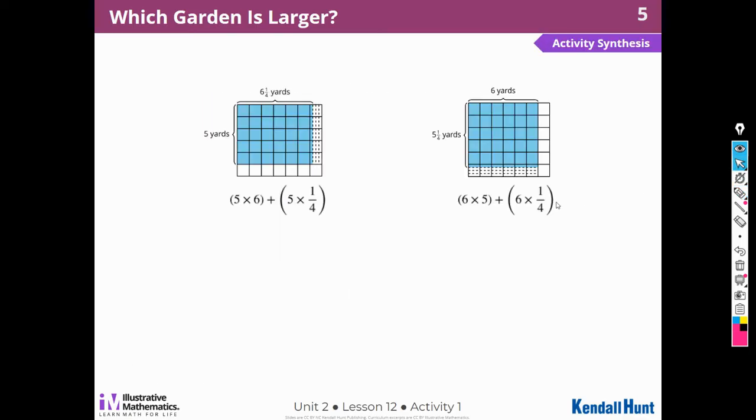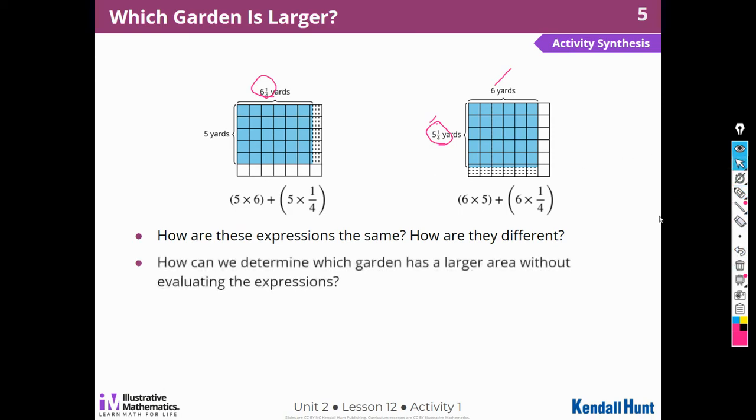Okay. Oh, and here we have some equations to help us think about it. How are these expressions the same, and how are they different? Expressions, not equations. So how are they the same? Well, we had 5 times 6 plus 5 times one-fourth on this side. So we decomposed the number with the fraction and multiplied the other times both of them. How can we determine which garden is larger without evaluating the expressions? Again, this is going to be 30, and this is going to be 5 one-fourths, and over here we have 30, and this is going to be 6 one-fourths. So this is going to be the larger garden.